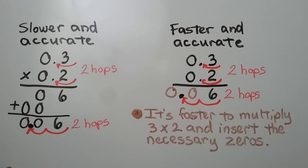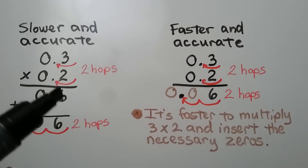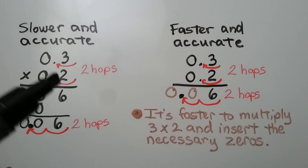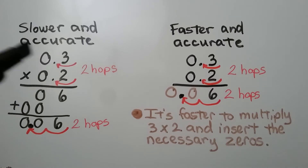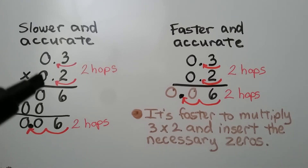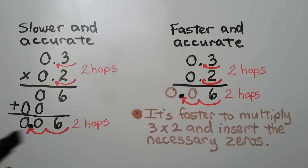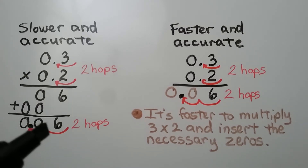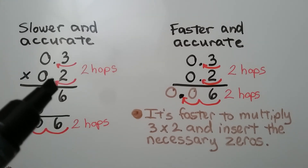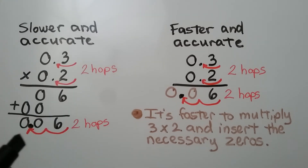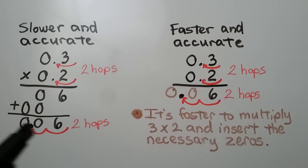We can multiply each place value, including the zeros. We do 2 times 3, which is 6; 2 times 0, which is 0; then 0 times 3 tenths is 0; and 0 times 0 is 0. Then we add up all the place values. We get a 6, a 0, and another 0. We see the two decimal hops in the factors, so there's going to be two decimal hops in the product.